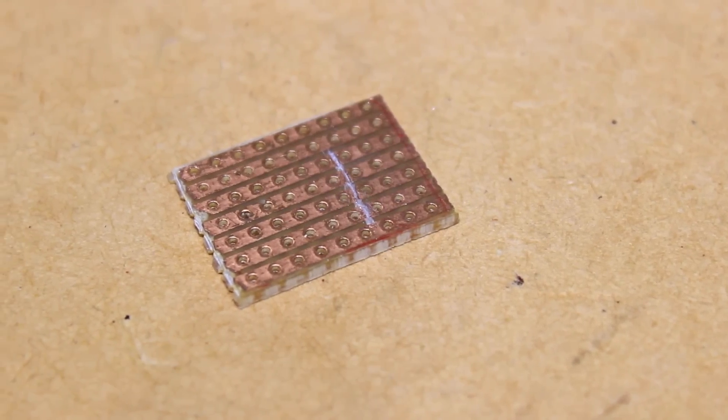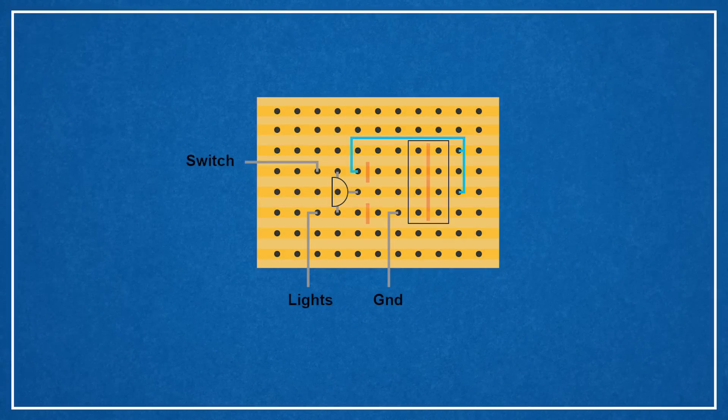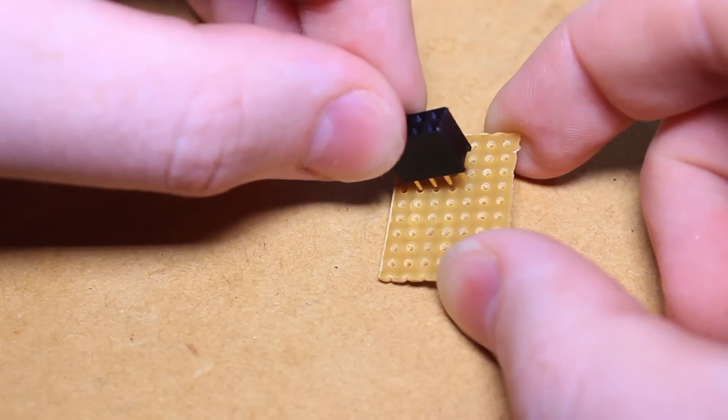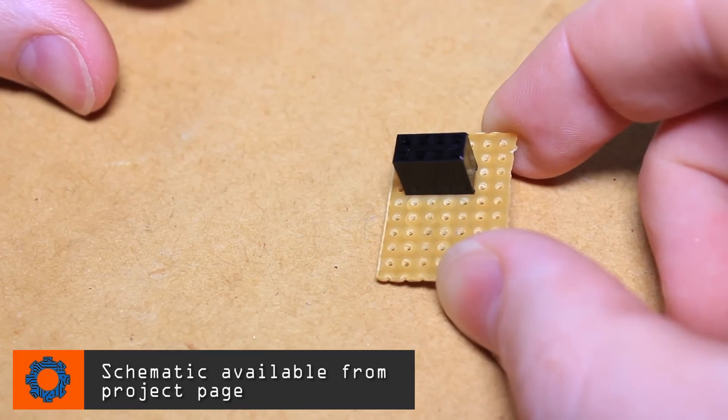To begin, I'm going to break some of the tracks on the strip board in the following configuration. This will allow us to use the socket without the pins shorting. We can then insert the socket into the strip board and solder it in place.